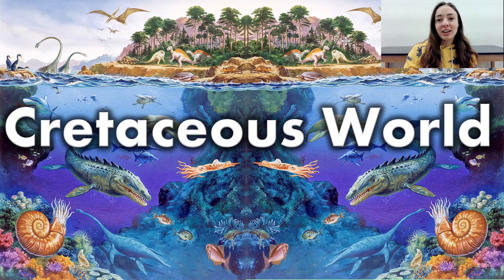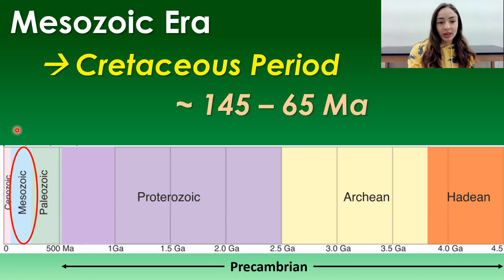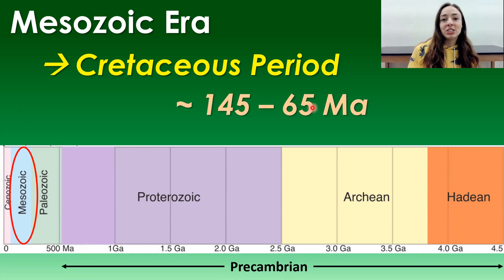Ever wondered what the earth was like and what other life was around when the dinosaurs roamed? In this video I'm going to be talking about life on earth during the Cretaceous period. This period is in the Mesozoic era, as shown on this timeline going from oldest to youngest. The Mesozoic era is circled, and the last period within it is the Cretaceous period.